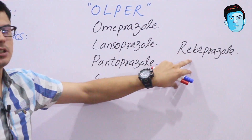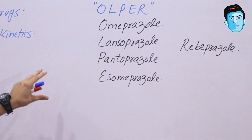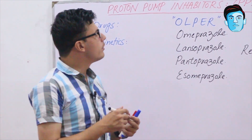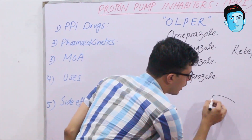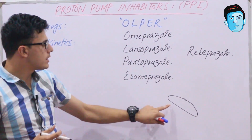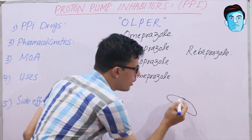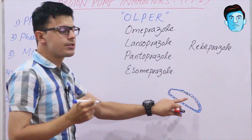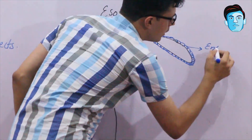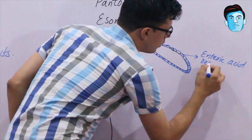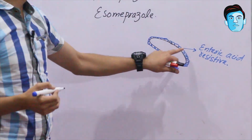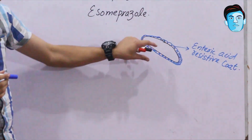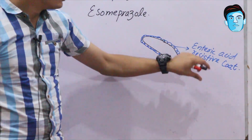Their main action is to inhibit the gastric acid secretion of the stomach. Now, regarding the pharmacokinetics of PPI: PPI is given orally, and the key point is that PPI drugs have a very specialized type of coating called an enteric acid-resistant coat.